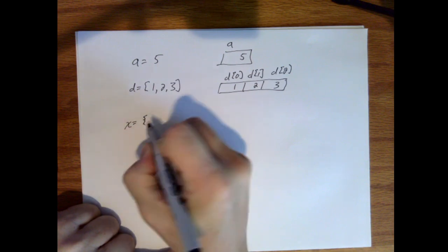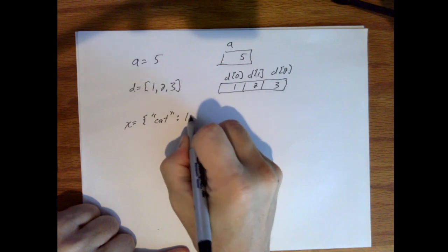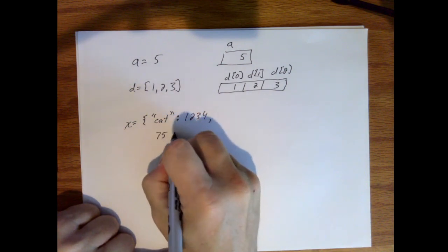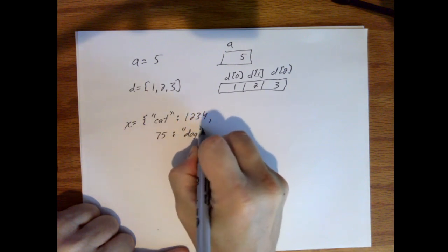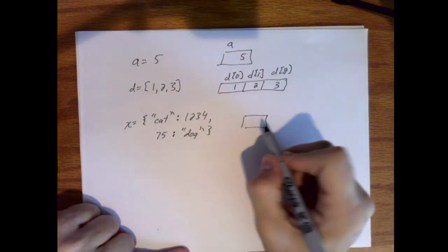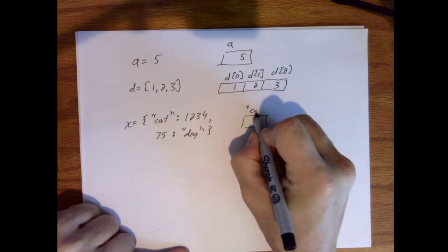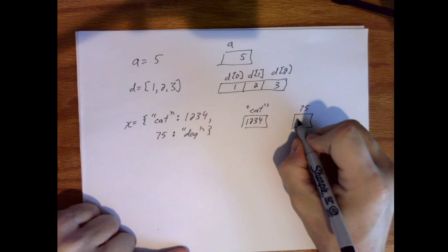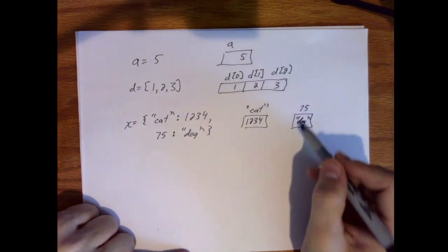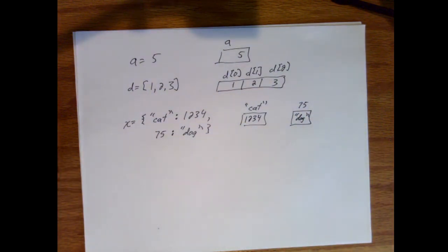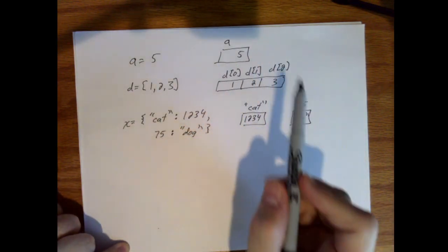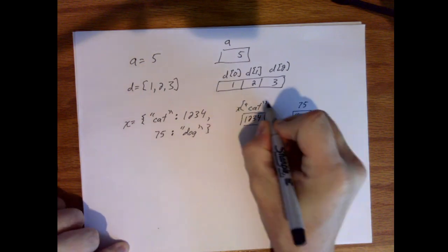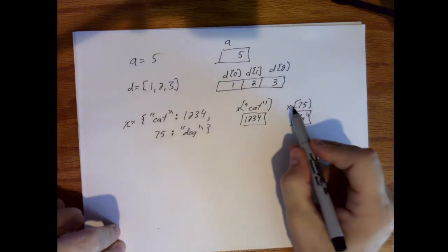Let's call this dictionary x. We don't have to write key-value pairs as rows, but doing so makes it easier to read. I can have a number as a key and a string as the corresponding value. So I have spots in memory — not necessarily adjacent — where I refer to one using the key 'cat' with value '1234', and another spot referred to by key 75 with value 'dog'. Just like before, x['cat'] gives me '1234' and x[75] gives me 'dog'.